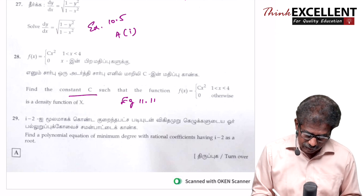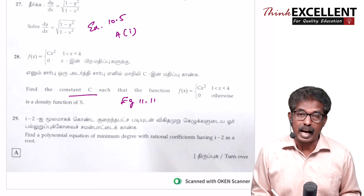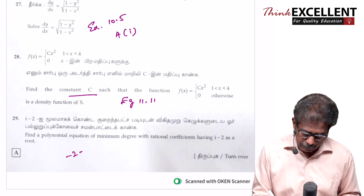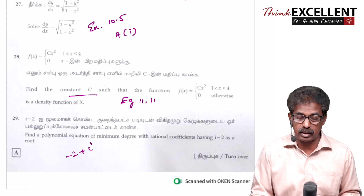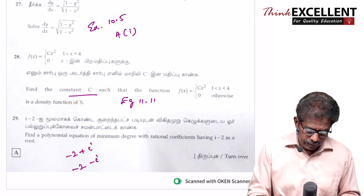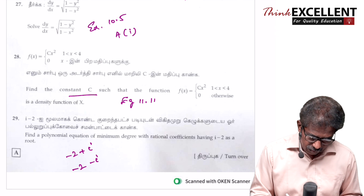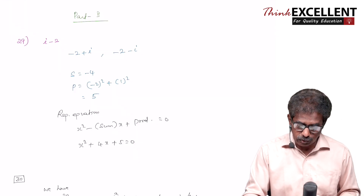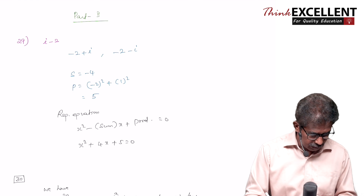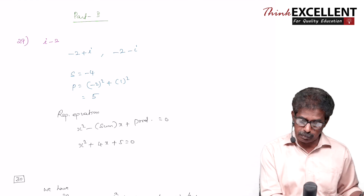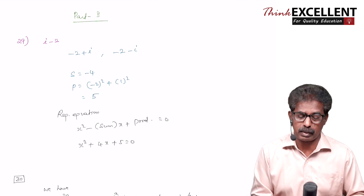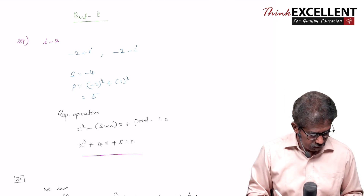Question 29 is a created question. The root given is i minus 2, which is actually minus 2 plus i. So the other root — complex roots occur in conjugate pairs — is minus 2 minus i. From there you can find the sum of the roots and the product. The product is a² + b² = 5. The required equation is x² minus (sum of roots)x plus (product of roots) = 0.